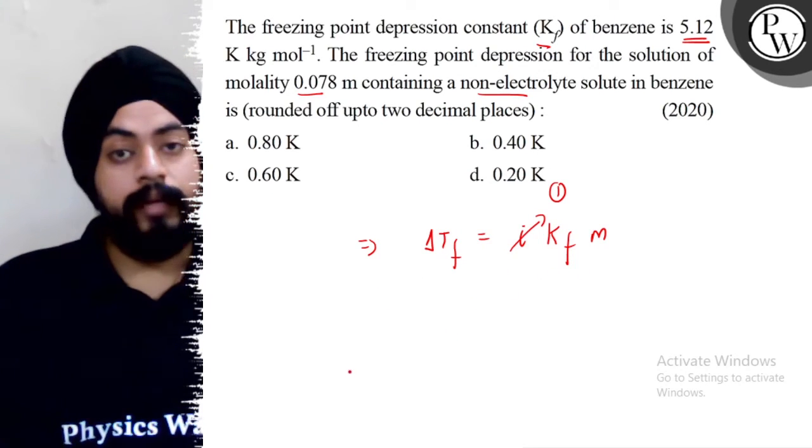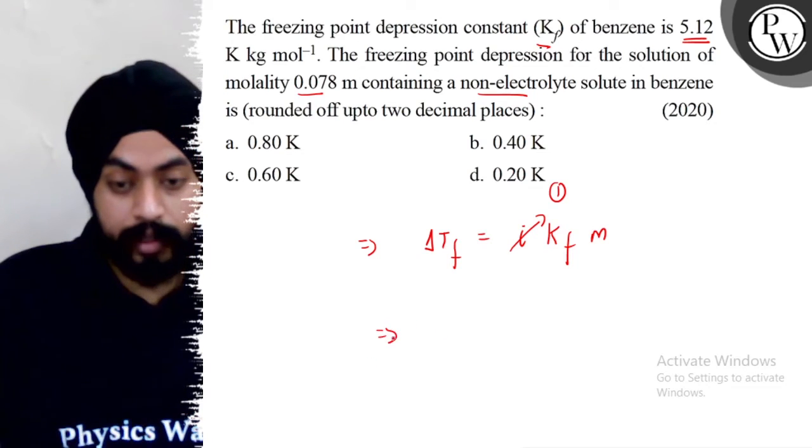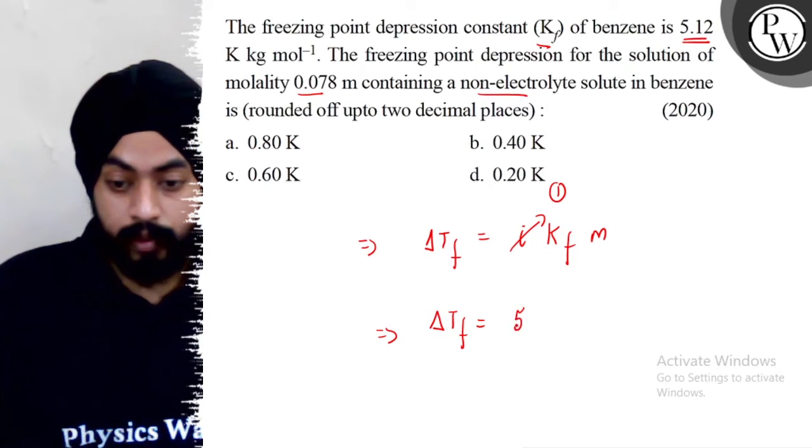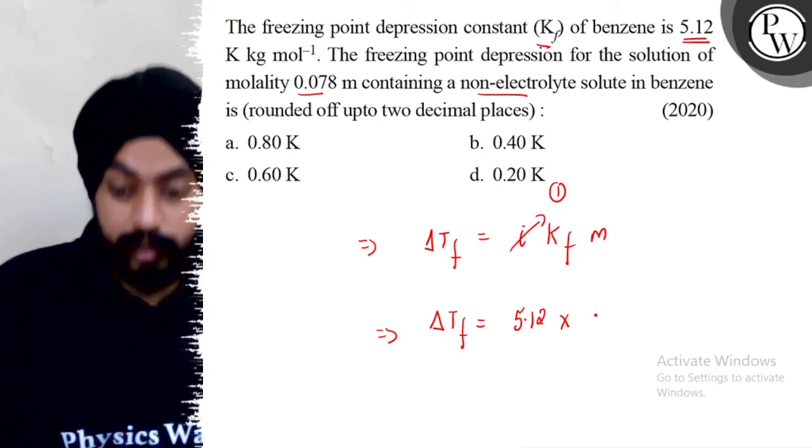So delta Tf will be Kf into M. Kf is 5.12 and molality is 0.078.